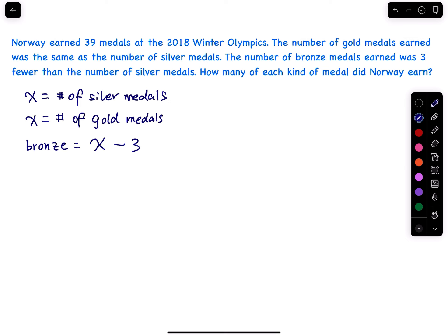I will do the silver plus gold plus bronze equals 39. So that will be x plus another x plus another x minus 3 equals 39. Since these are three kinds, I will just use a parenthesis.